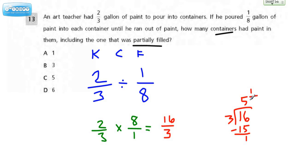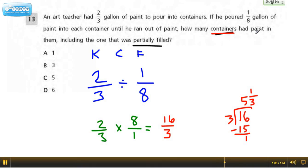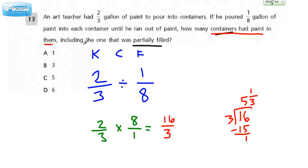Now, if it wanted to know exactly how much paint we have, if we break them up into one-eighths containers, it would be five and one-third. But we need to interpret this because they want to know how many containers had paint in them, including the one that's partially full. So we have five completely full, and then this is a partially filled container. So if we take those two together, then that's going to give us six. Six would be the right answer.